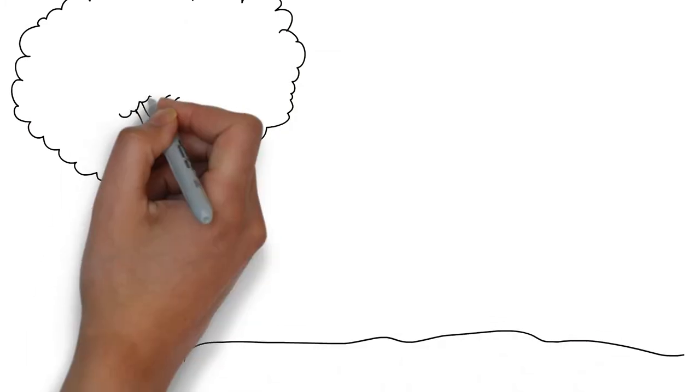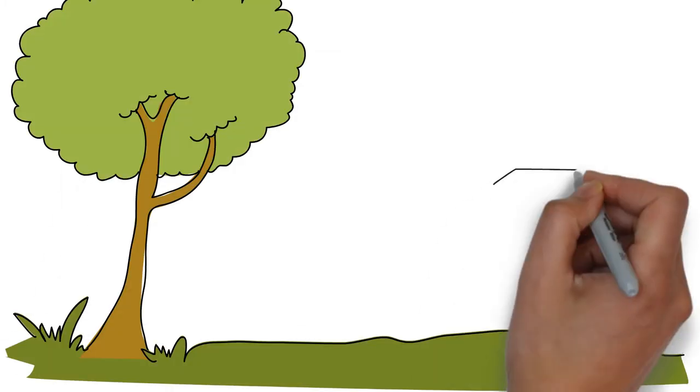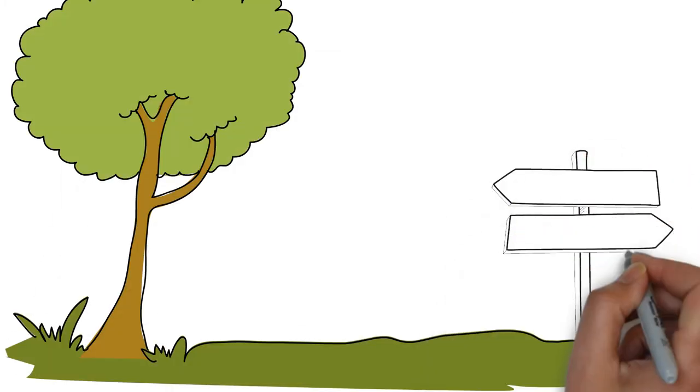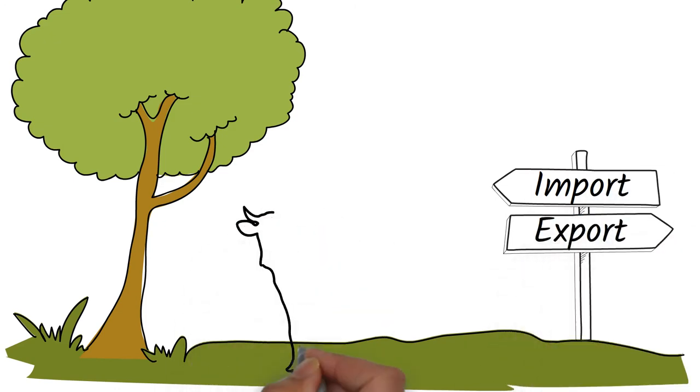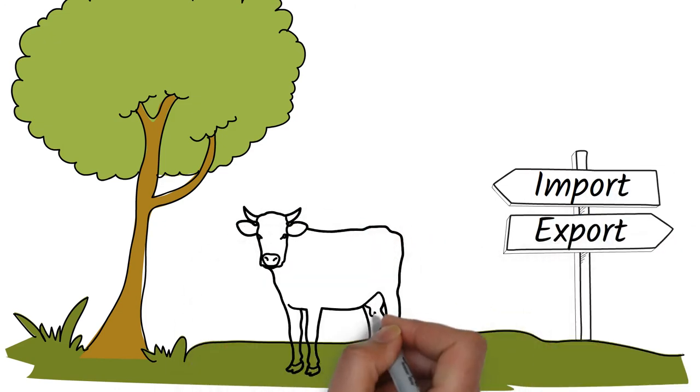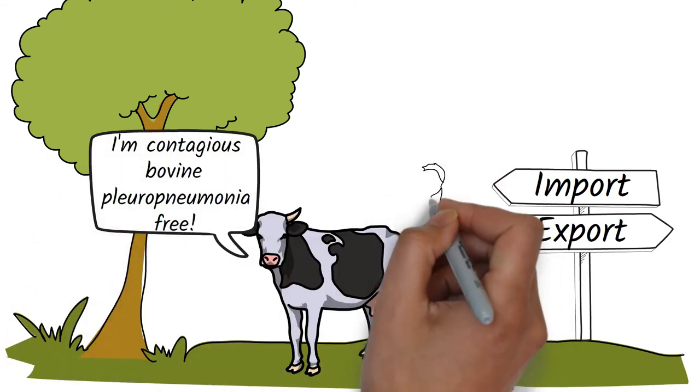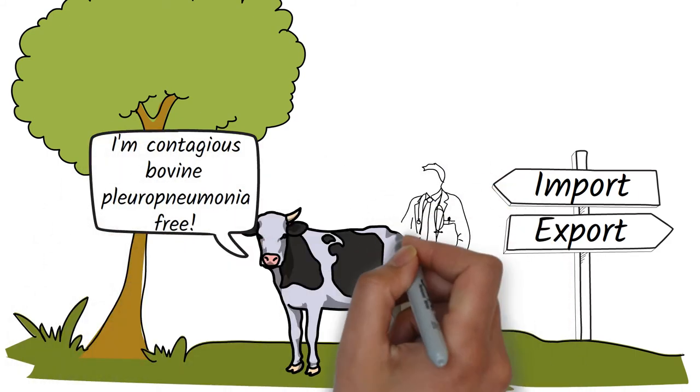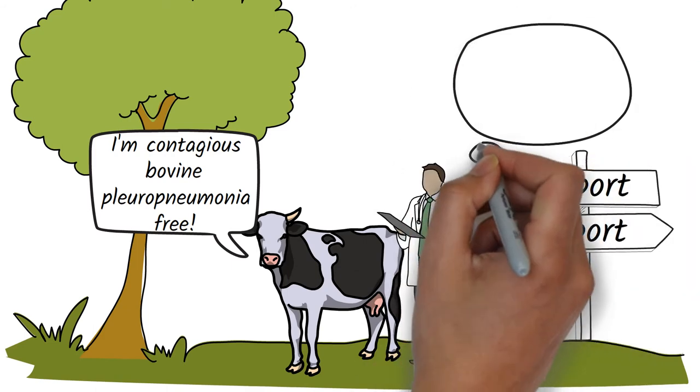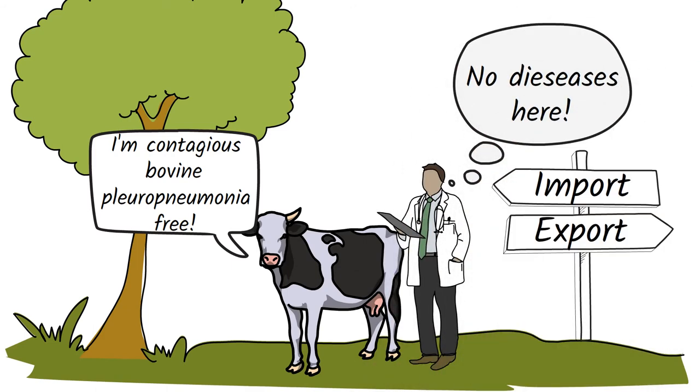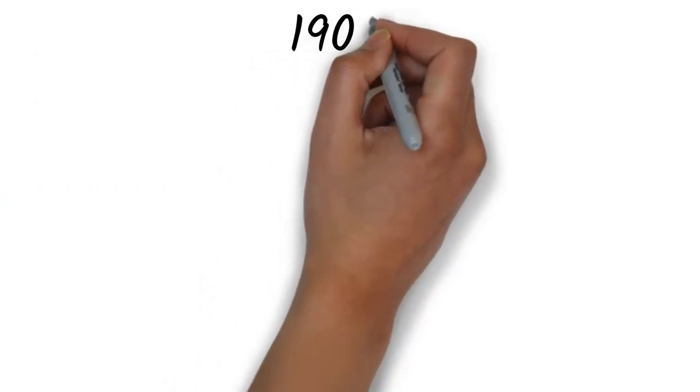Under his leadership, the Bureau eradicated contagious bovine pleuro-pneumonia in the United States, studied and controlled Texas fever, otherwise known as Babesia, put in place the Federal Meat Inspection Program, began inspecting exported livestock and the ships carrying them, began inspecting and quarantining imported livestock, and studied the effect of animal diseases on public health.